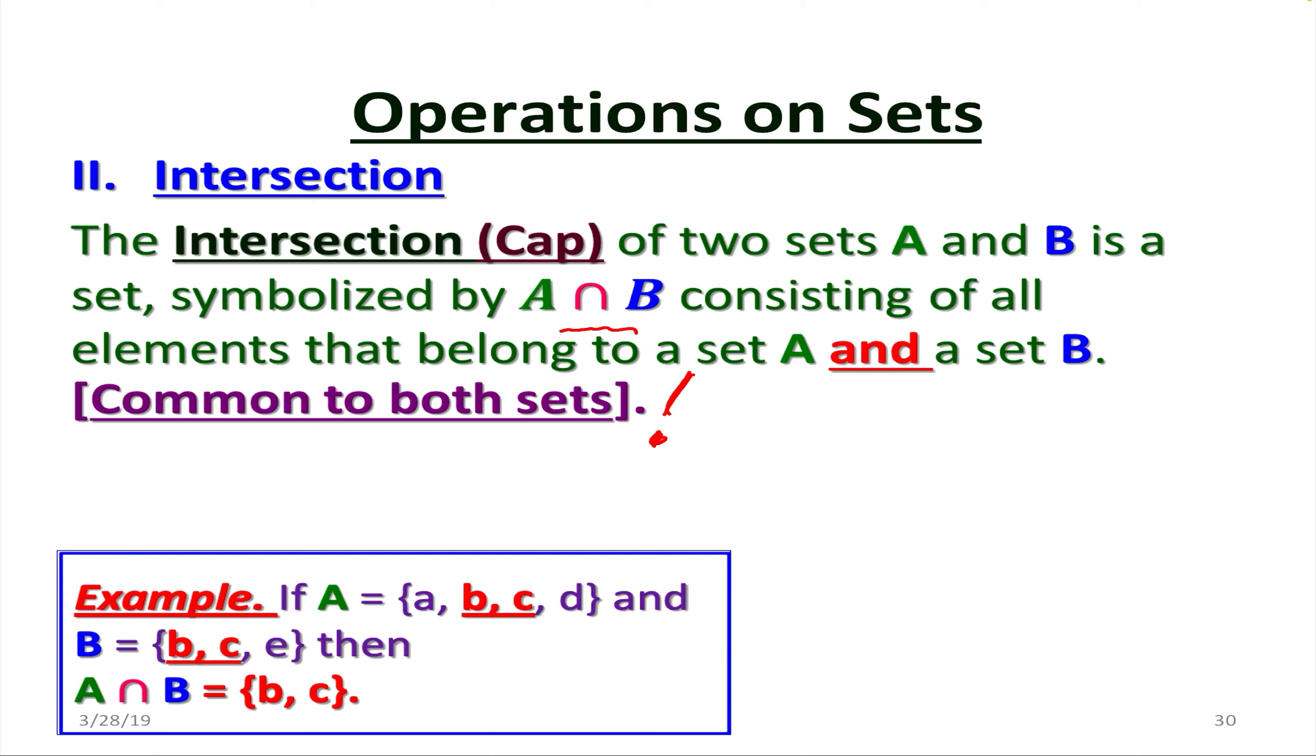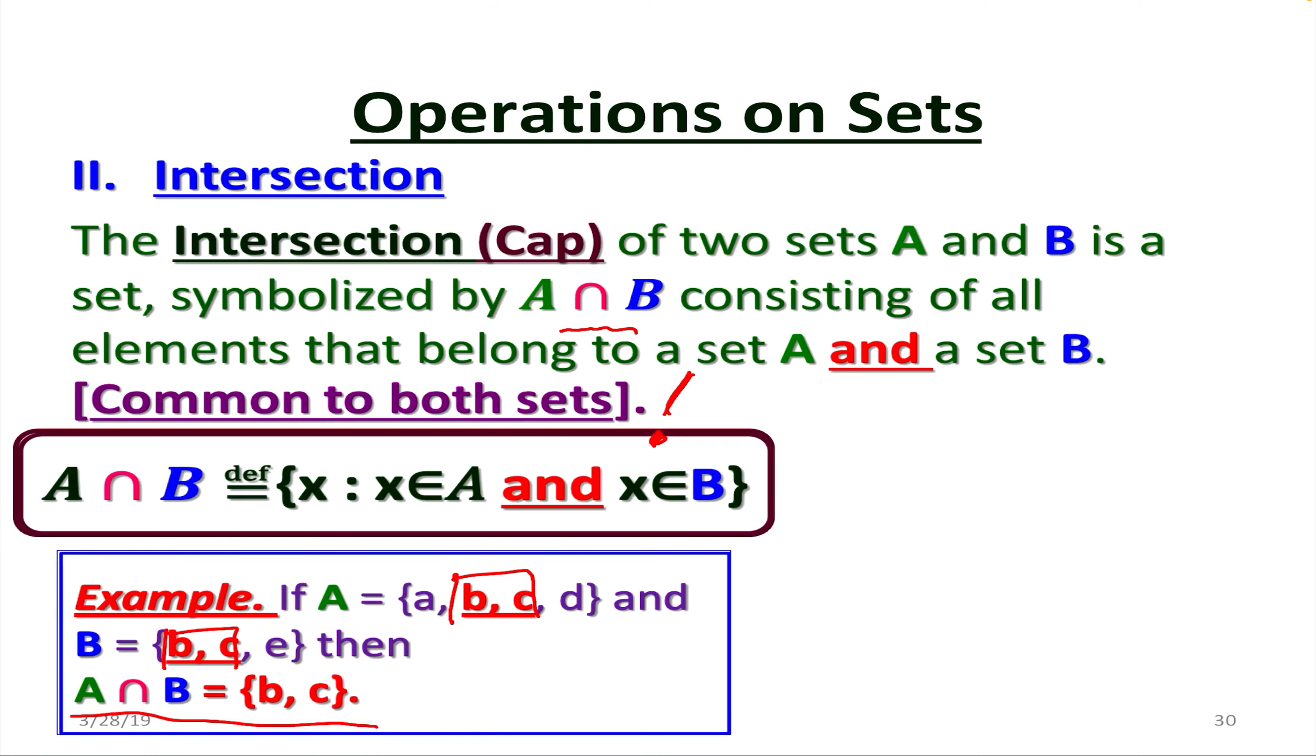For instance, say we have set A containing the elements A, B, C, and D and B containing B, C, and E. So we're looking for the common part, the elements, the part that belongs to both A and B. So it's going to be only two elements, B and C.